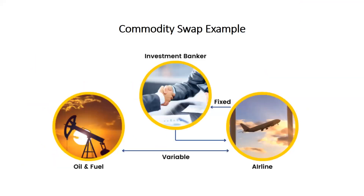Let's take an example of an airline and oil. Suppose the airline takes oil in barrels from the oil industry and they believe the oil price can increase in the near future. To mitigate this risk, they go to a swap bank and take an agreement where they pay a fixed amount to the bank, and whatever the variable price — more or less — is taken care of by the investment banker.